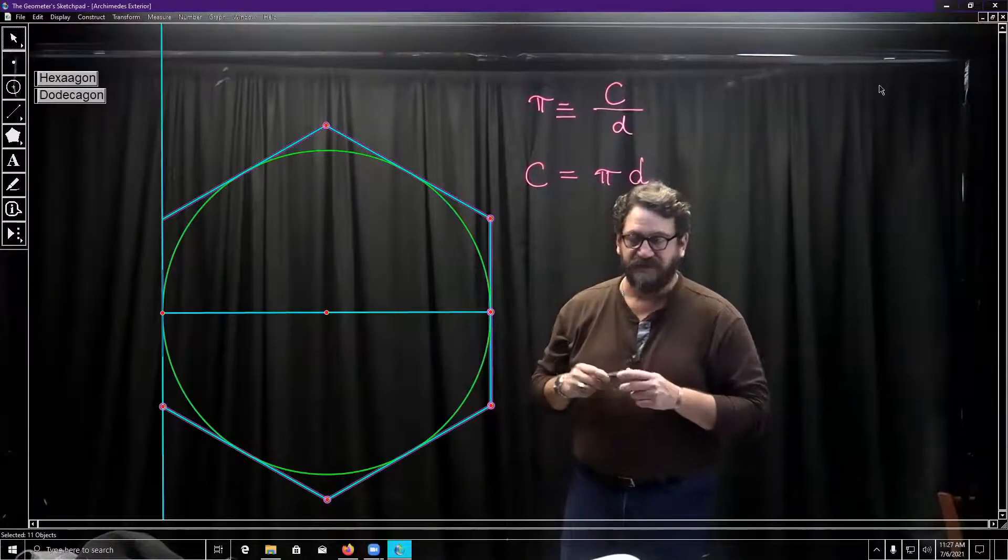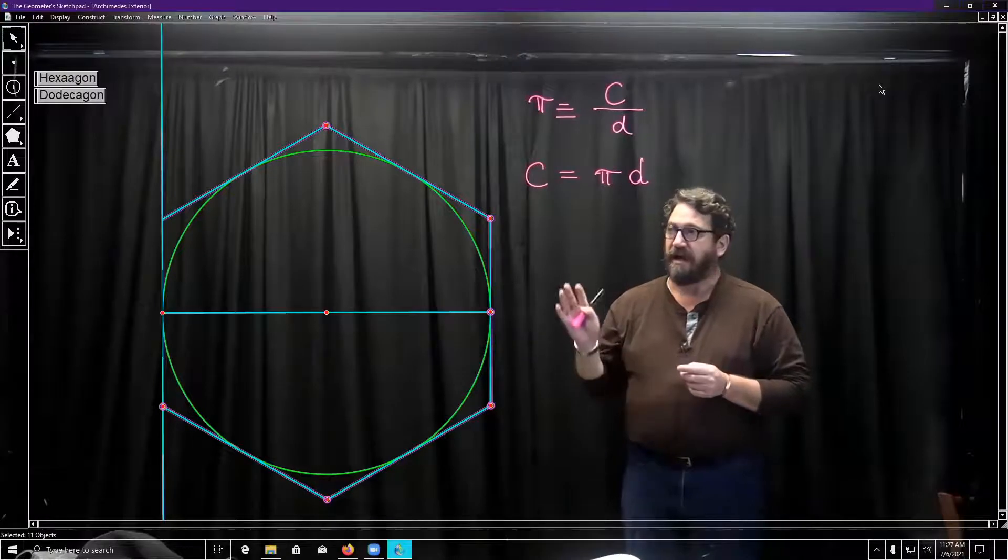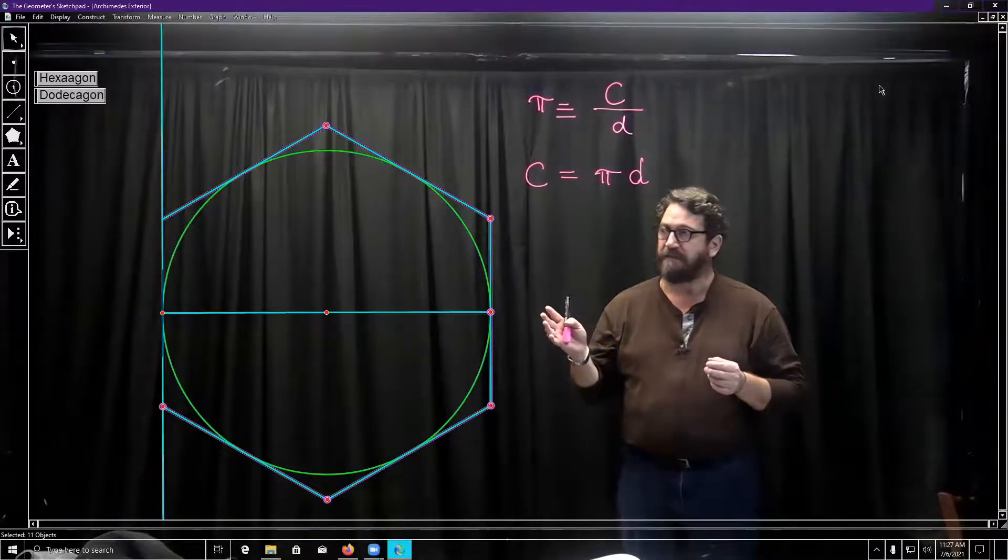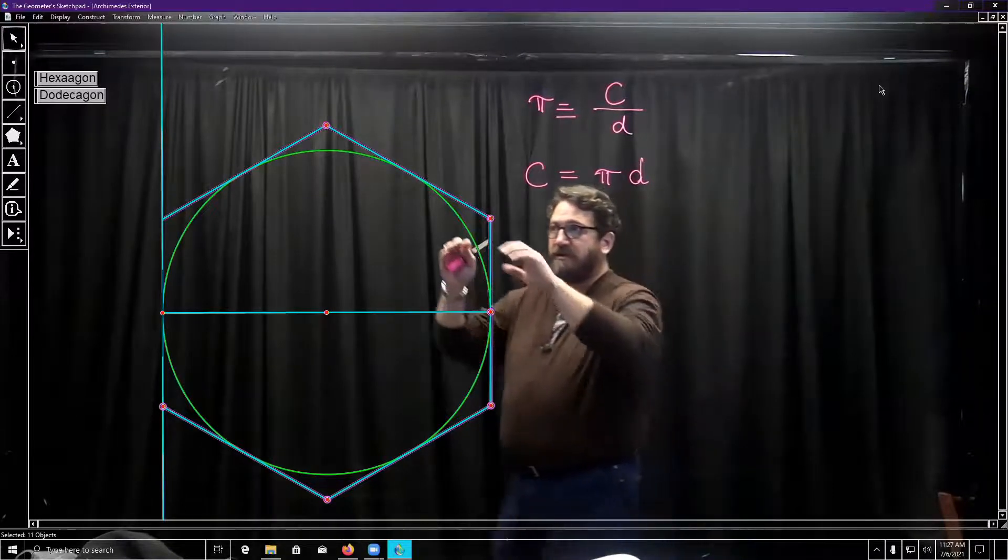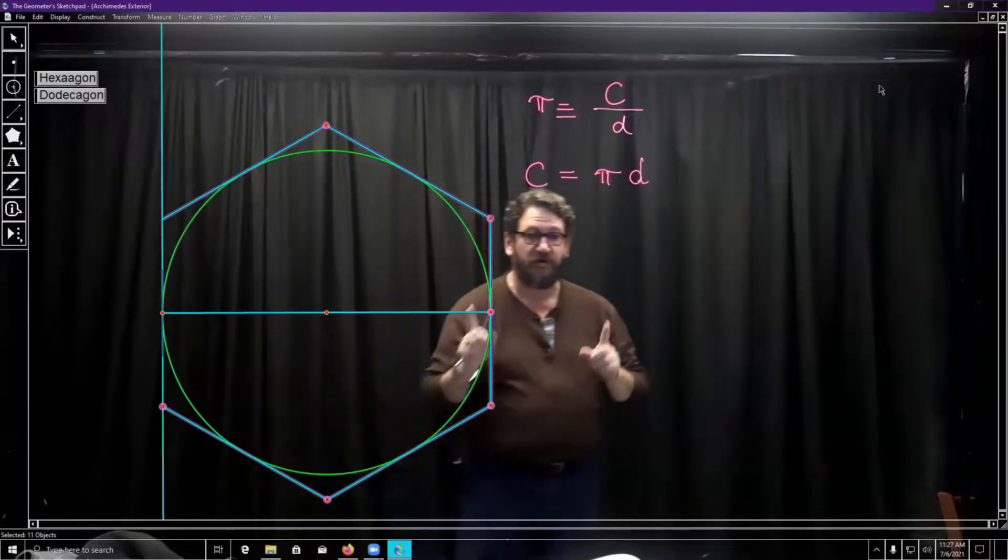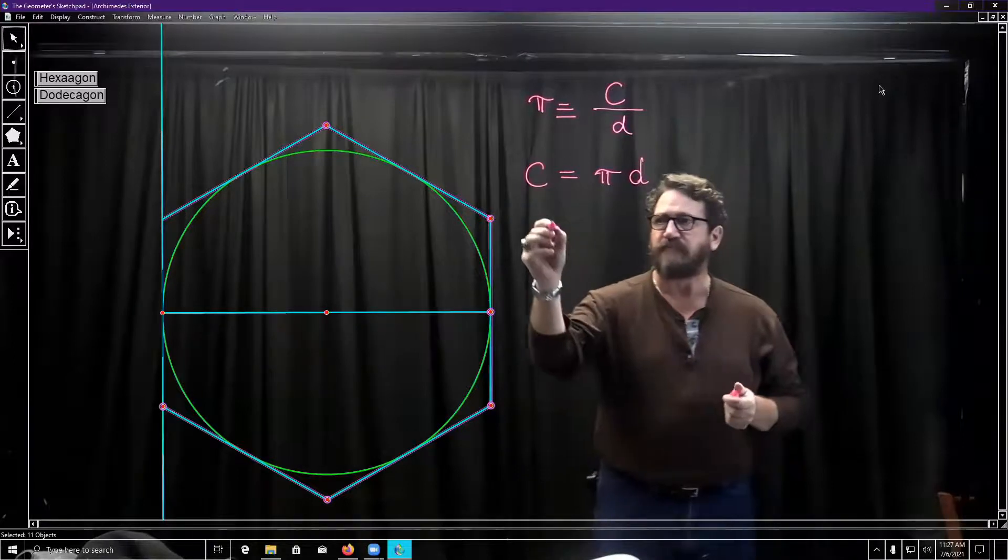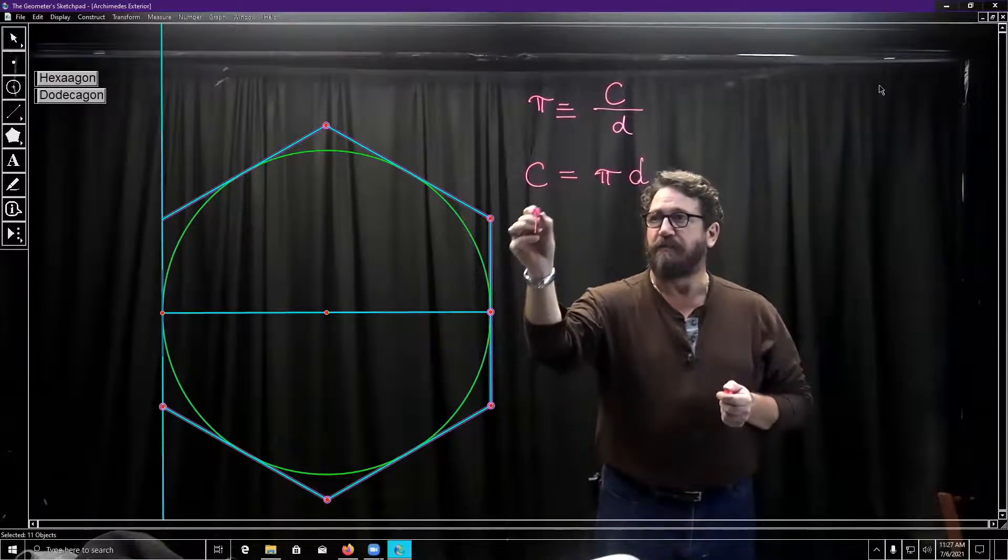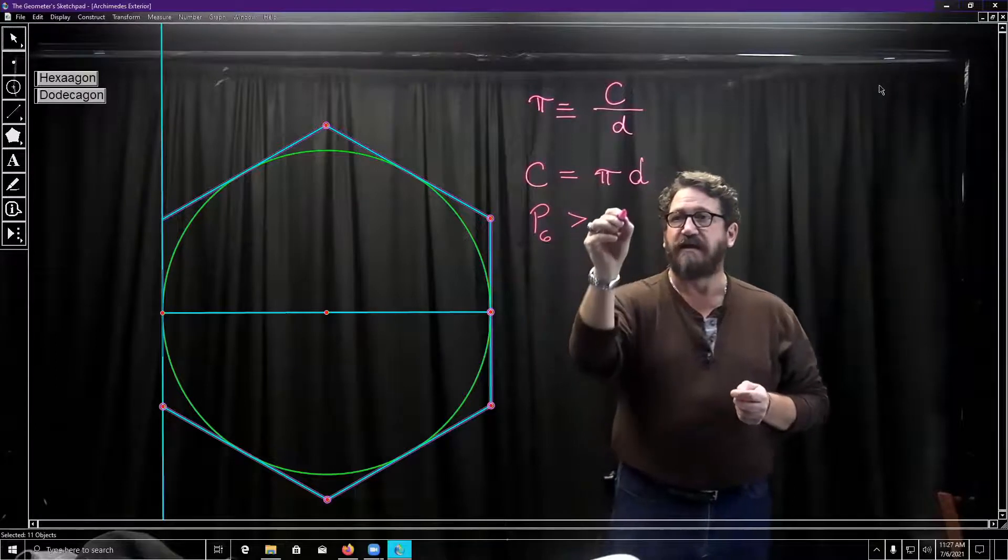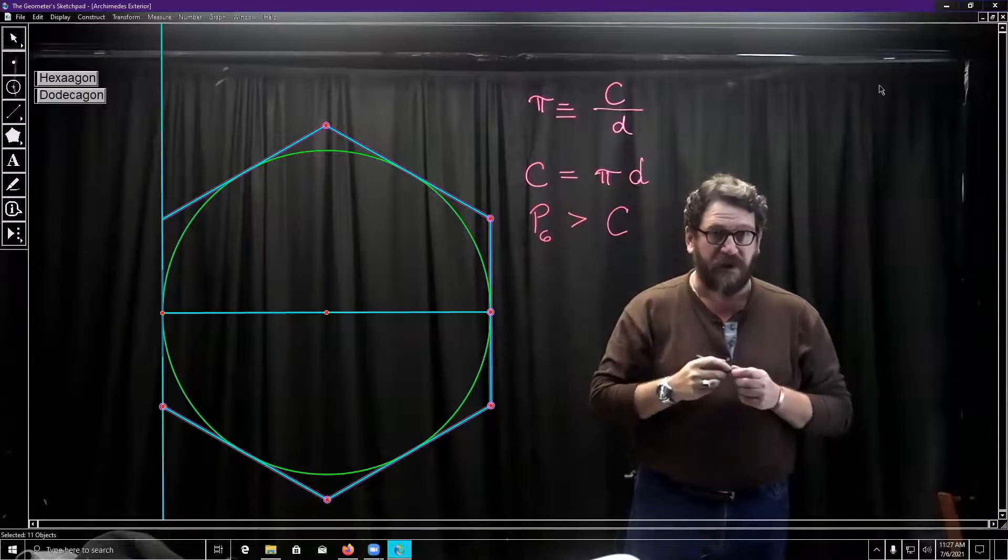And here it is, the hexagon. Archimedes is going to begin with this hexagon and what he is going to do is say that I know this hexagon since it is described about the circle must have a perimeter greater than that of the circle. So he's saying the perimeter of a six-gon is greater than the circumference of this circle that we have. Not a problem.